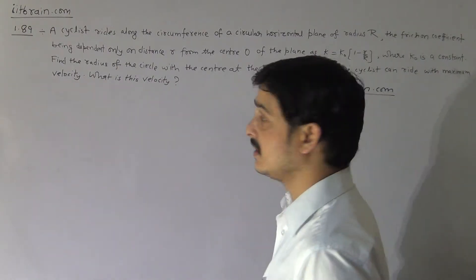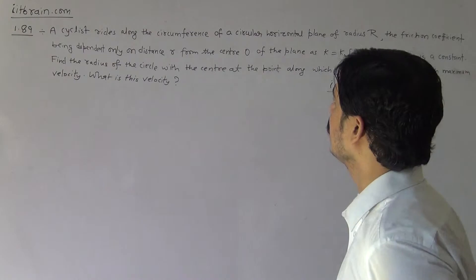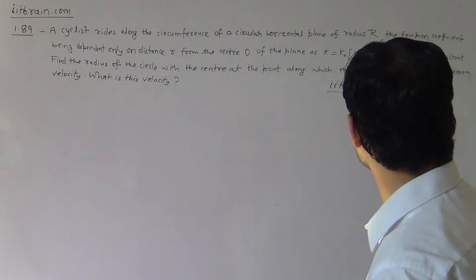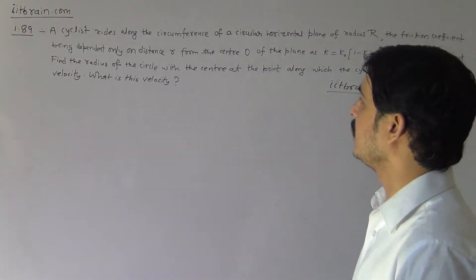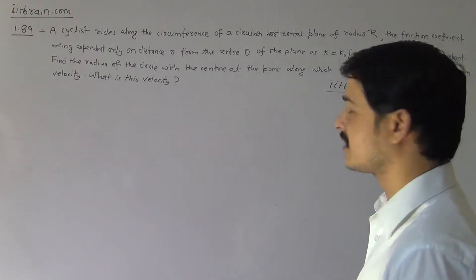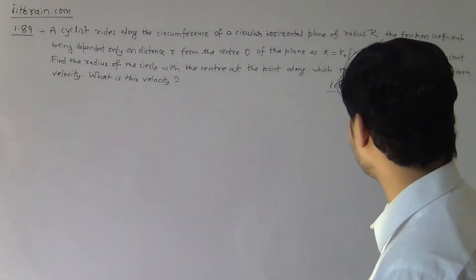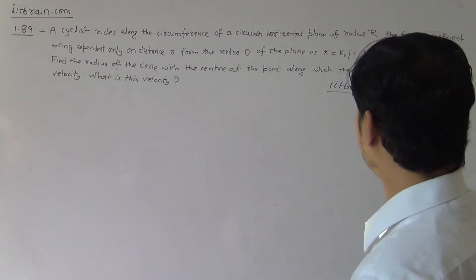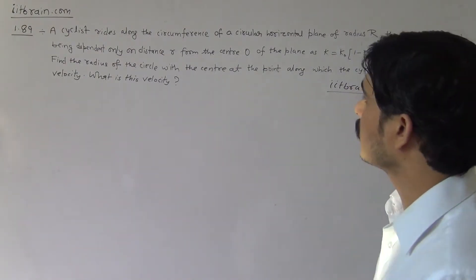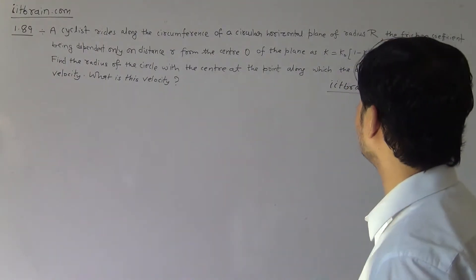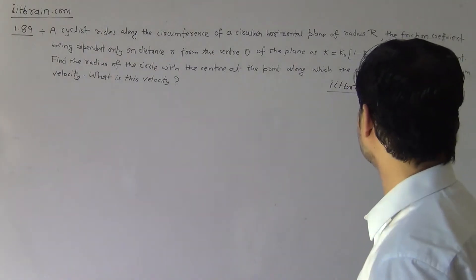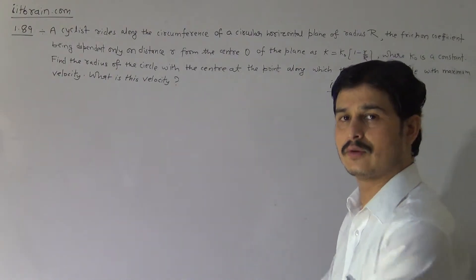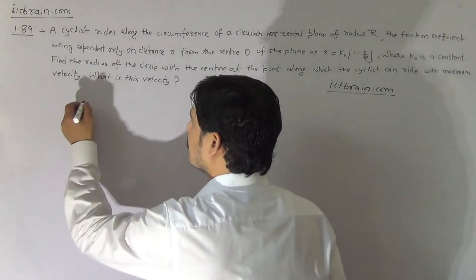Hello students, this is problem 1.89. A cyclist rides along the circumference of a circular horizontal plane of radius capital R, the friction coefficient being dependent only on distance r from the center O of the plane as k equal to k naught times one minus r over capital R, where r is the distance from the center to the point where the cyclist revolves. Find the radius of the circle with the center at the point along which the cyclist can ride with maximum velocity, and what is this velocity.